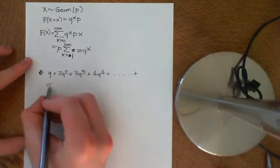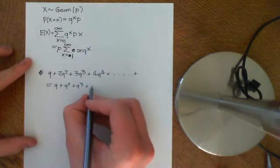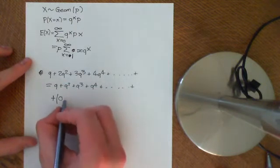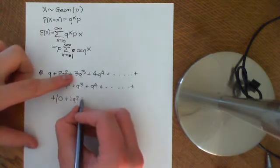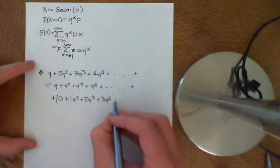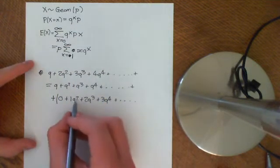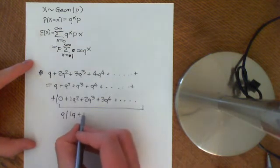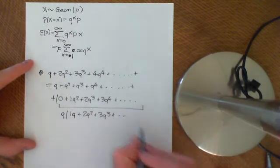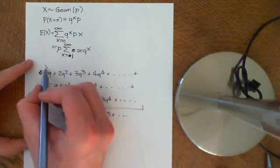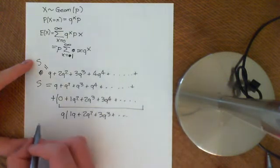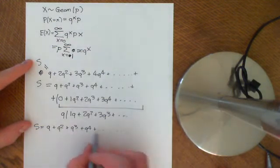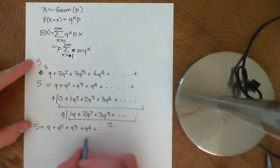We could rewrite this as q plus q squared plus q cubed plus q to the 4 all the way on, plus q times the quantity 1q plus 2q squared plus 3q cubed and so on. If we call this whole sum S, we get that S equals q plus q squared plus q cubed plus q to the 4 plus dot dot dot, and then what we've got here is S back again, so this is S plus q lots of S.